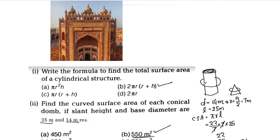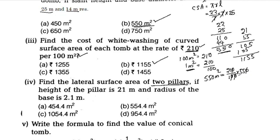For the pillar, this is the lateral surface area, which is the curved surface area. The formula is 2πrh. We have two pillars. The height H is 21m and the base radius is 2.1m.